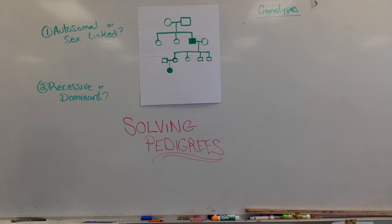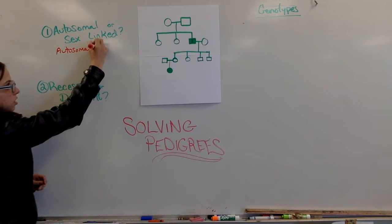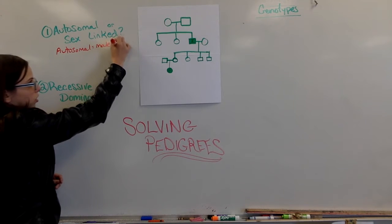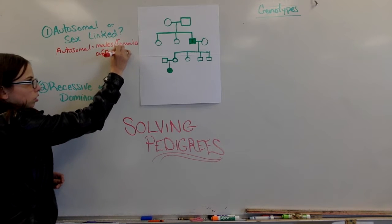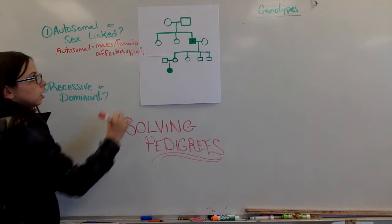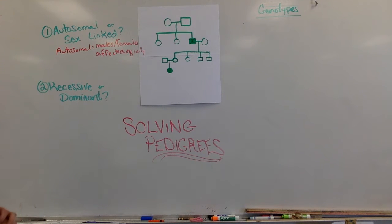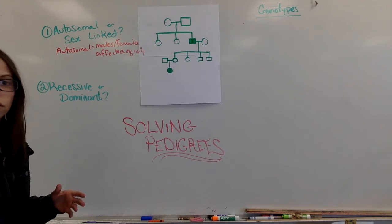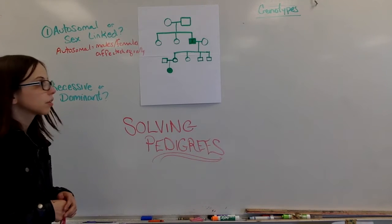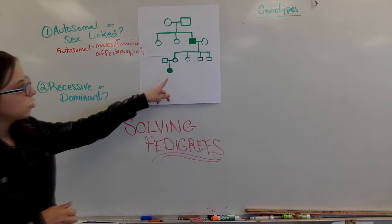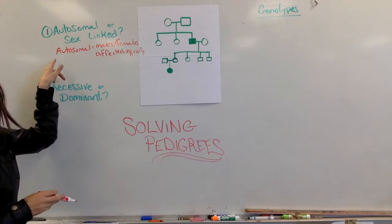If it's autosomal, there is a tendency you will have males and females affected equally or close to it. And this is a pedigree that only shows four generations and you would want to have more people to make a definite conclusion. But for here, we have two people that have the traits, one male and one female. So we can determine this is probably autosomal.